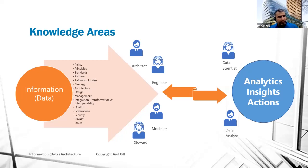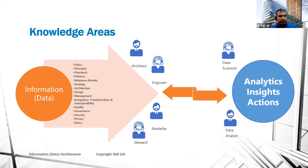Information design is different from architecture. A lot of people confuse them because initially information architecture or data architecture emerged as information design in the 70s or 80s. Later on it became more strategic in nature and more business oriented. Information architecture is more towards strategy, while design could be a little bit more low-level modeling of the data or information. Then there's how we manage, integrate, transform, share, and all those things.